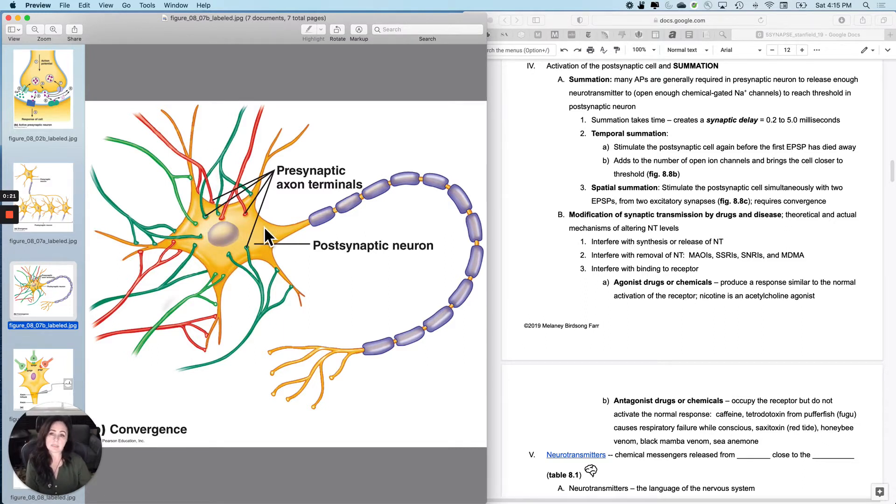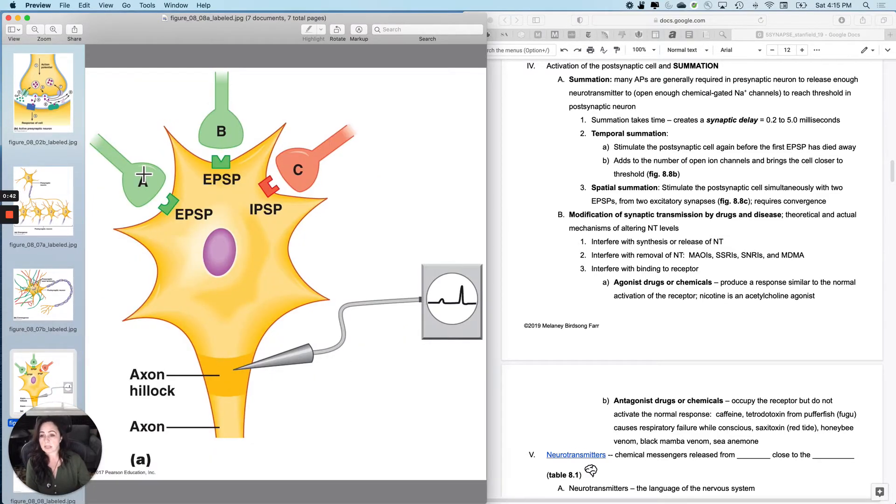Generally speaking, even if it were a one-to-one relationship, usually one action potential and one neurotransmitter release from one presynaptic cell is not enough to get the postsynaptic cell to an action potential. So let's look at a single excitatory synapse. Is releasing a neurotransmitter once going to get this one to an action potential? No, it generally doesn't.